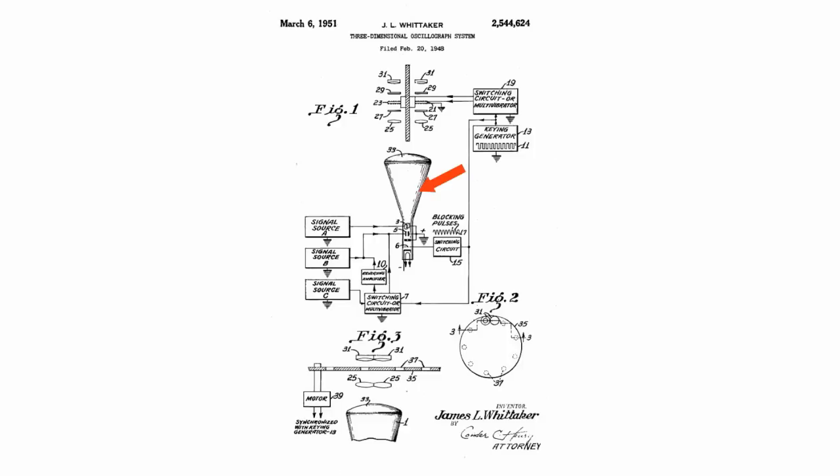The device had three inputs of ABC signals regulating the length, width and height of the object displayed. The signal regulating the object depth was used to control the frequency of multivibrators switching the image between the eye lenses.